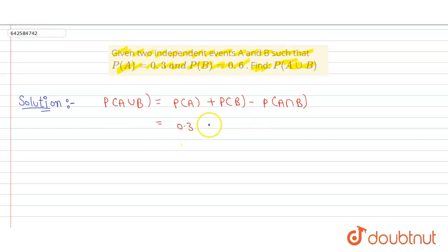0.3 and 0.6, and we have to find out P(A intersection B). So let this be first equation.